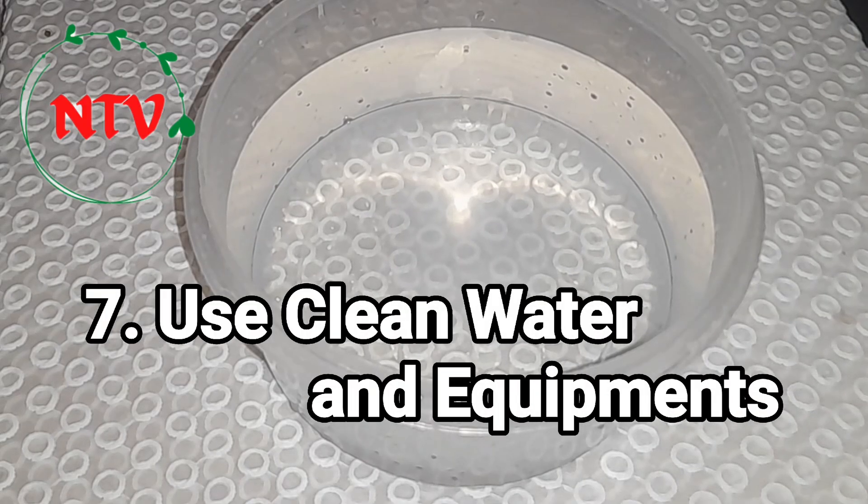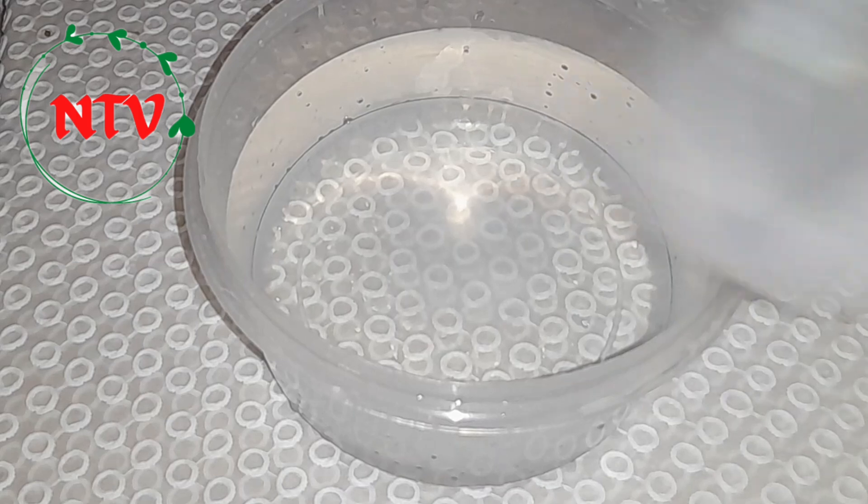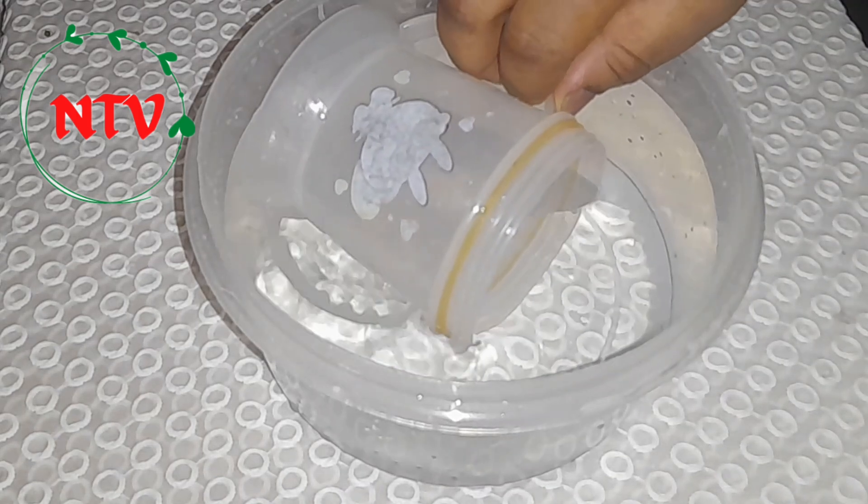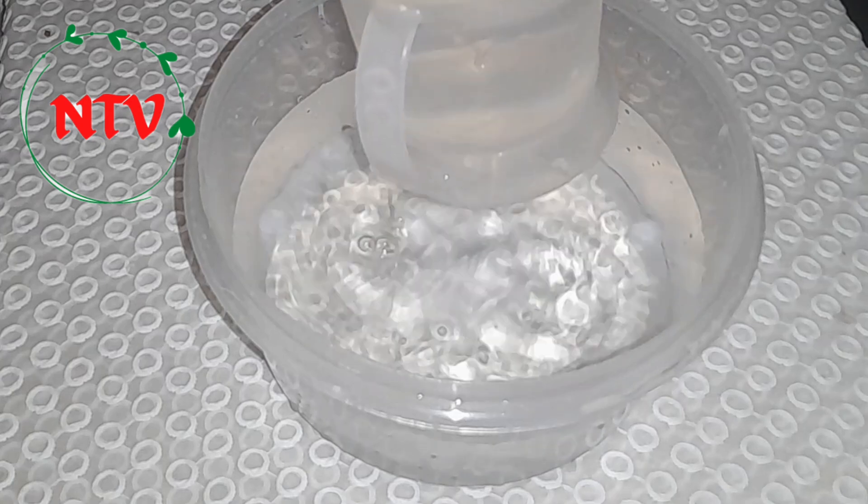Number 7: Use clean water and equipment. Make sure all your equipment is well cleaned before making your product. Your water must also be very clean with no color or odor. Using unclean water and equipment can lead to bad odor in your product.